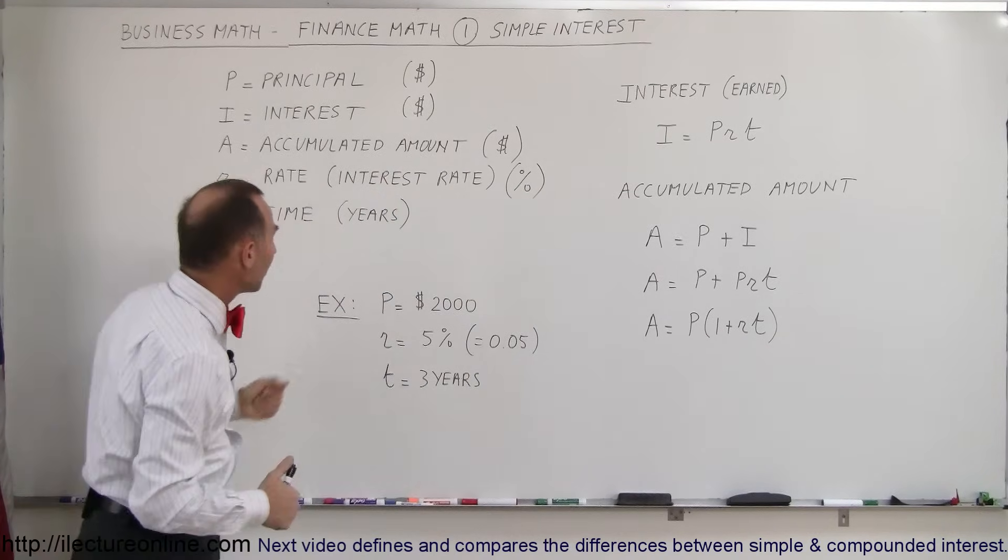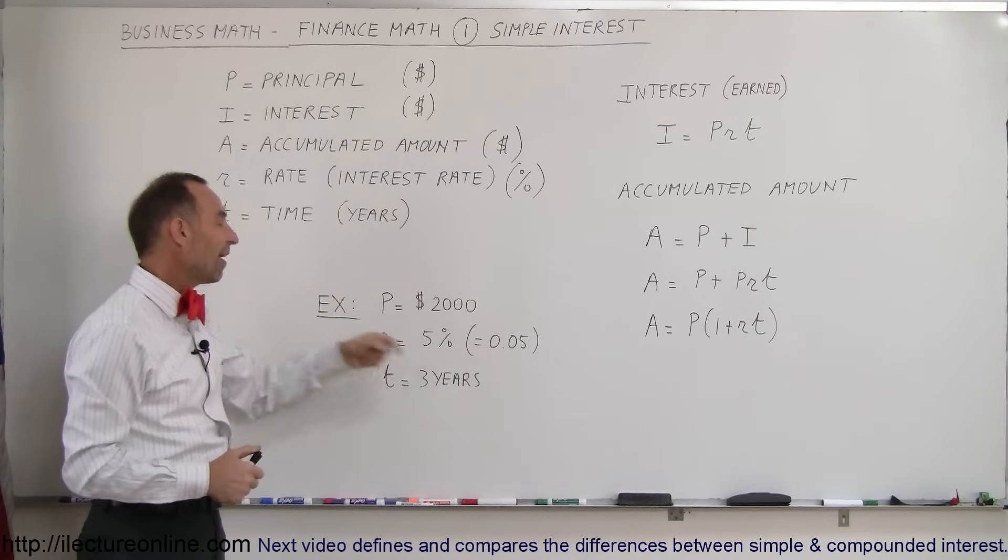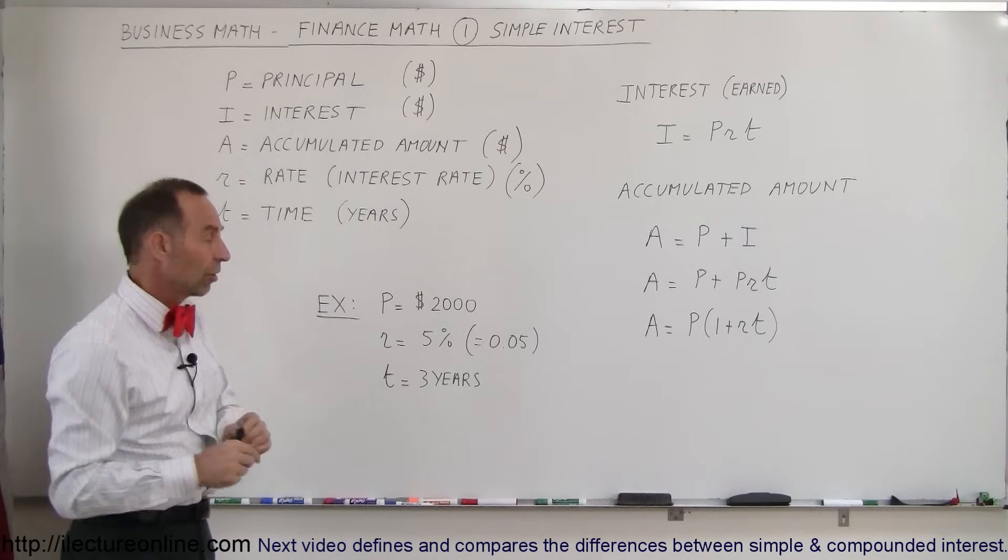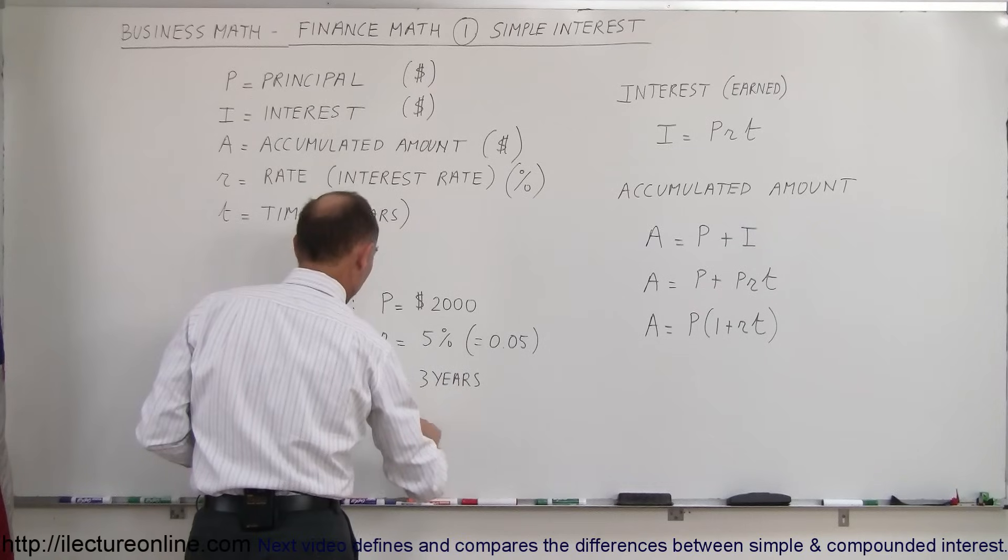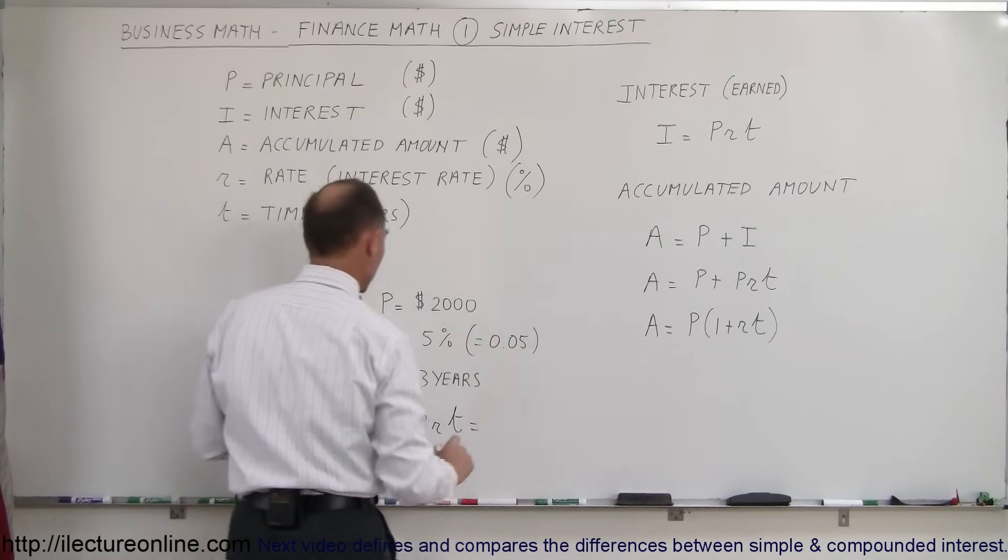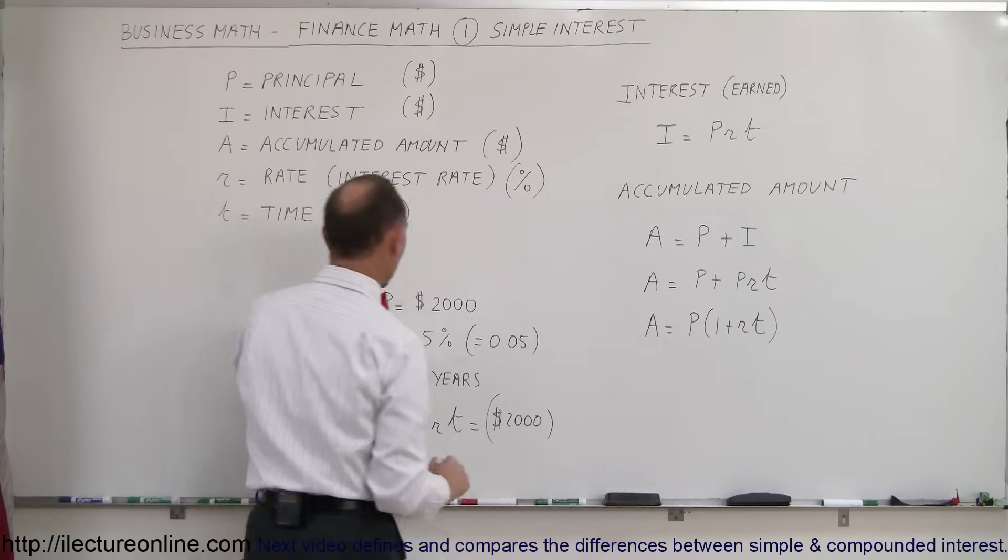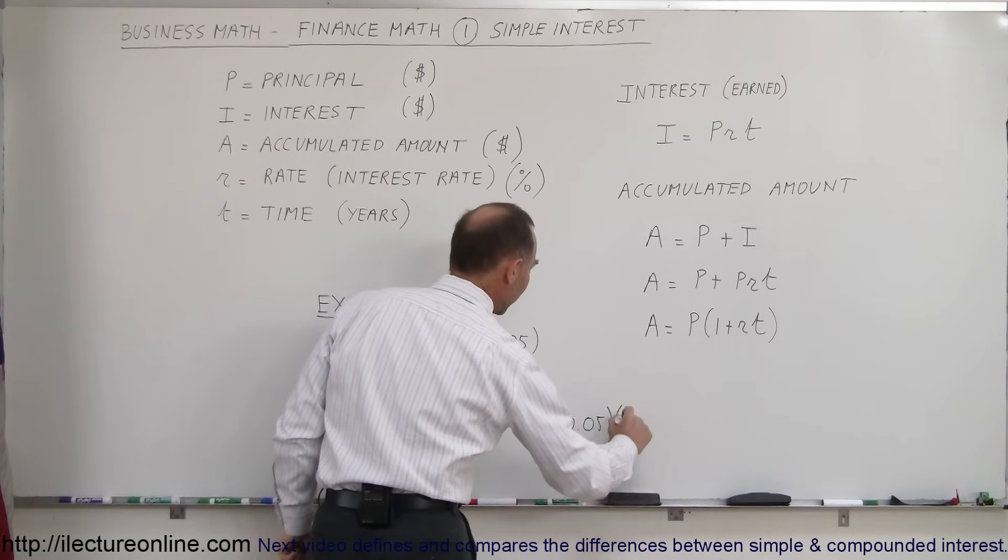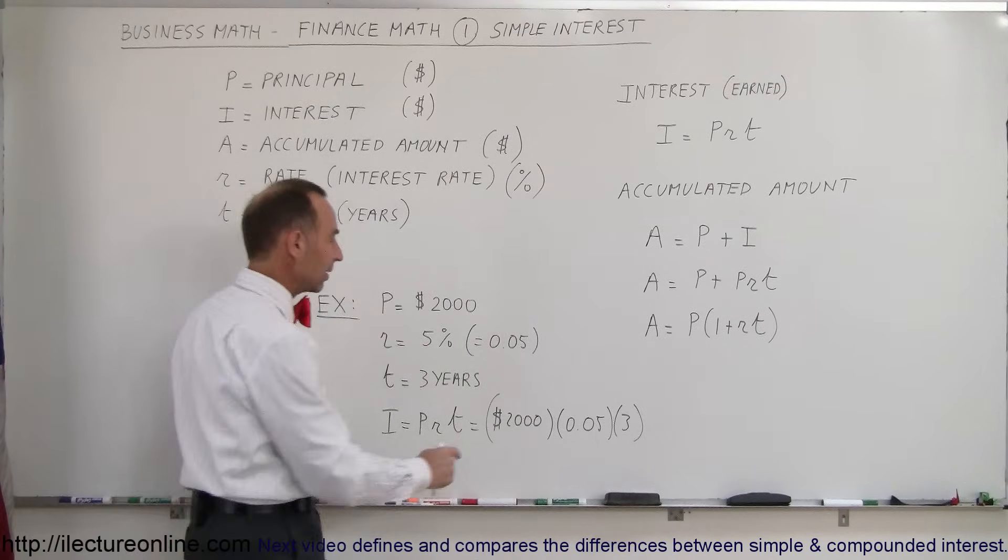All right. So here's an example. Here, let's say that we're going to invest $2,000 at 5% interest rate and we do it for three years. But it's simple interest, which means that the interest that you'll earn, I, which is equal to the principal times the rate times the time, which is going to be equal to $2,000 times the rate, which is 5%, so that will be 0.05 times the time, which is three years.